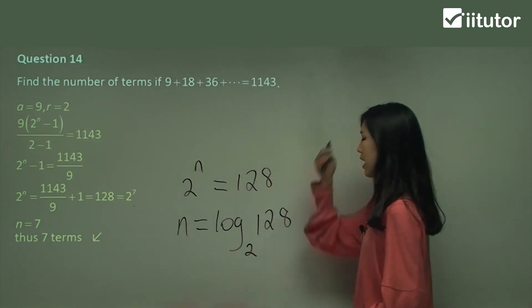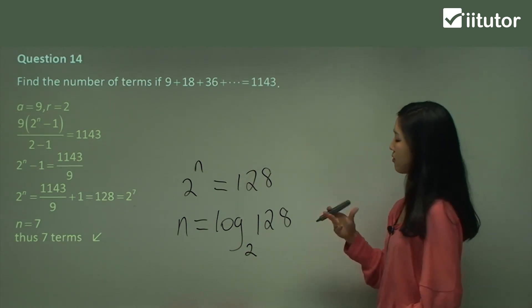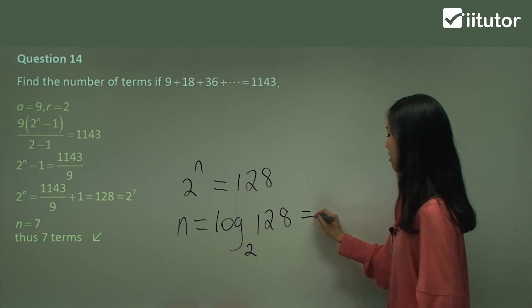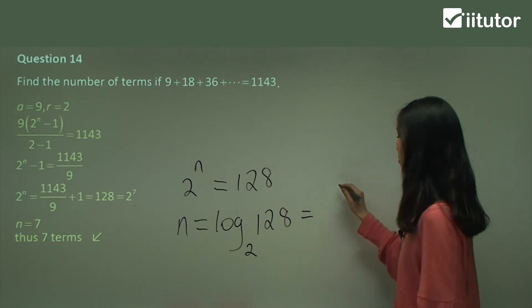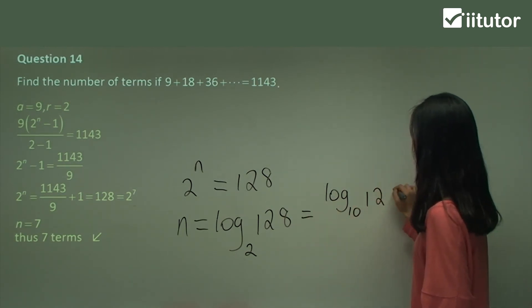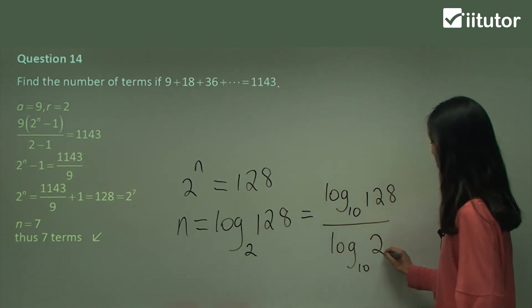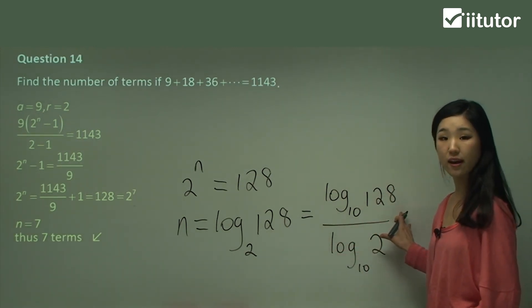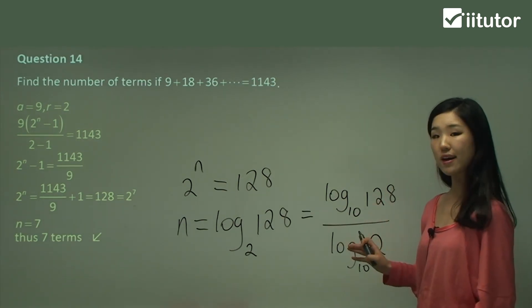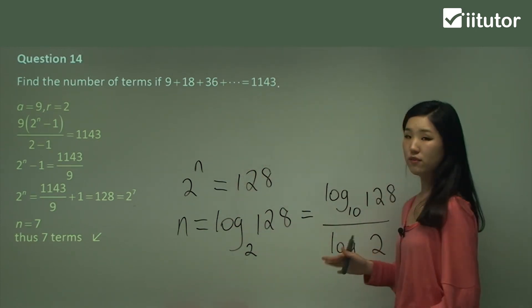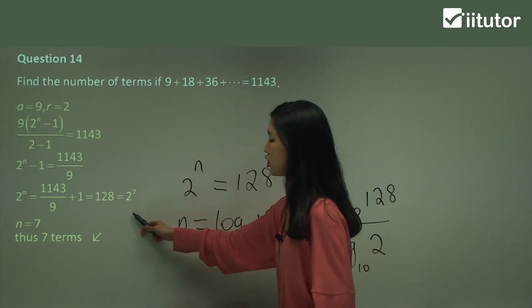But I really think in this case, this would be a more simpler way because see how we just got the answer in a few steps. Because this one, you'll have to have a bit more steps. Because look, we can't find what log base 2 is, right? So we'll have to go ahead and do that fraction thing again. Probably have to go log base 10 of 128 over log base 10 of 2. And you'll have to put this into your calculator.